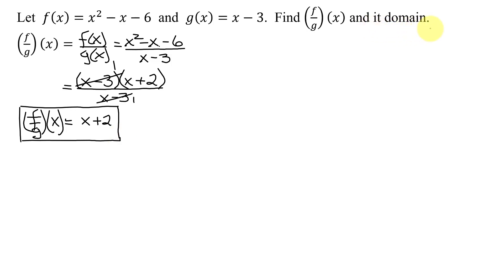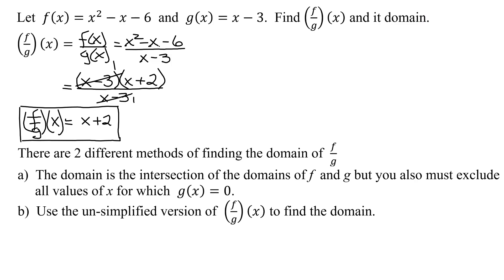Next, we need to find the domain of the quotient function. There are two different methods for finding the domain of f divided by g. The first method says the domain is the intersection of the domains of f and g, but you also must exclude all values of x for which g(x) equals 0. The second method says just use the unsimplified version of f divided by g of x to find the domain. I think method 2 is a little easier, so that's what I'm going to use.